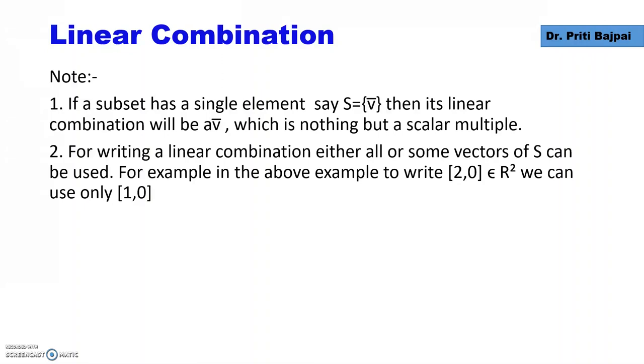Second thing, for writing a linear combination either all or some vectors of S can be used. If we want to write a vector [2,0] from R², we can only use [1,0] from S as 2 times [1,0], or we can use both vectors as 2[1,0] + 0[0,1].